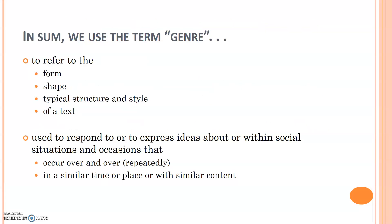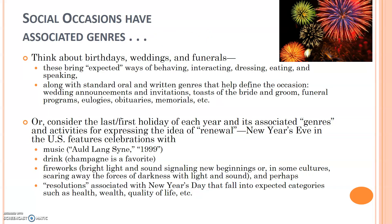So we use the term genre when referring to the form, shape, and typical structure and style of a text. But we may also think about genre when talking about different social situations or occasions that occur over and over, or in a similar time or place with similar content. Essentially, social occasions have associated genres. When it comes to occasions like birthdays, weddings, and funerals, there are certain expectations for how we should behave, interact, dress, eat, and speak.